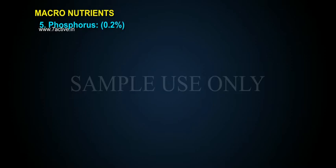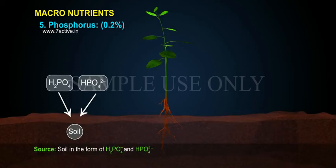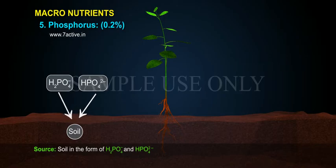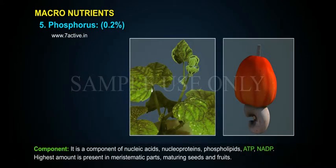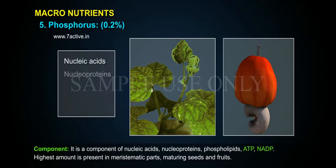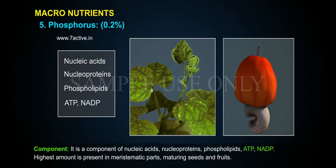Phosphorus constitutes 0.2% of dry weight. Source: soil, in the form of H2PO4- and HPO4-2-. It is a component of nucleic acids, nucleoproteins, phospholipids, ATP, and NADP. The highest amount is present in meristematic parts, maturing seeds and fruits.